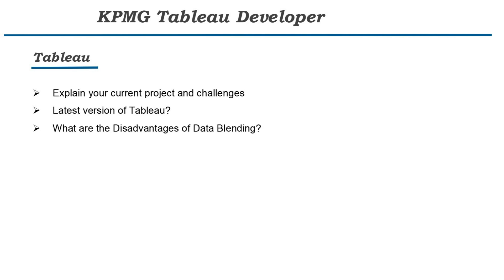The next question is: what are the disadvantages of data blending? Data blending is used to connect data from multiple data sources, but there are a few limitations. First, data blending happens at the aggregated level — whenever we need to combine data at the row level, we can't do it with data blending. Second, data blending always works with a left join; we cannot use other joins. Third, filters on the secondary data source don't apply before the data blending step, because data blending applies sheet by sheet. Before designating primary and secondary sources, we cannot apply filters on the secondary data source.